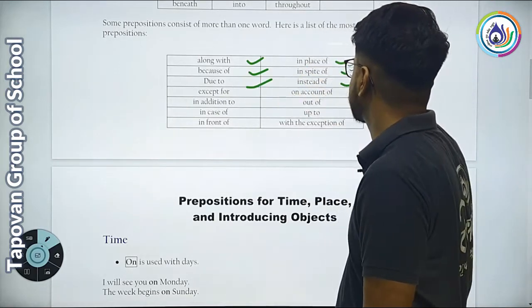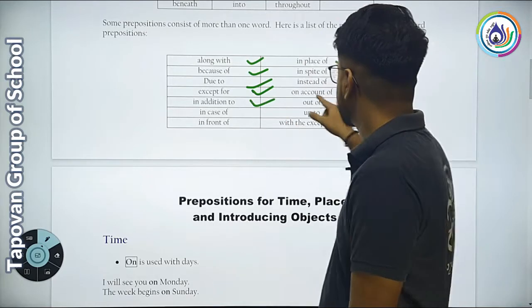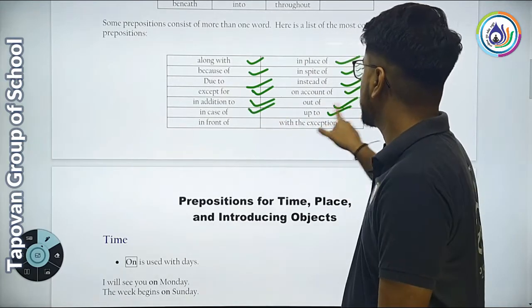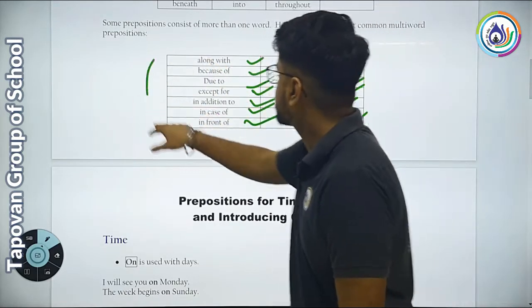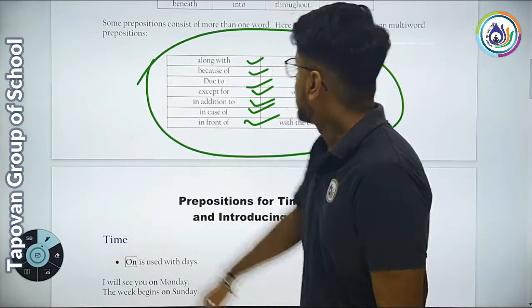In addition to, out of, in case of, up to, in front of, with the exception of. These are prepositions consisting of more than one word.